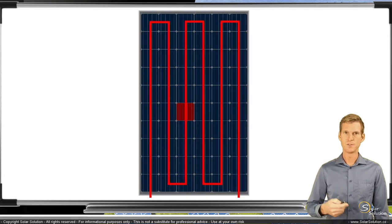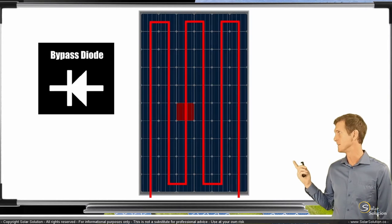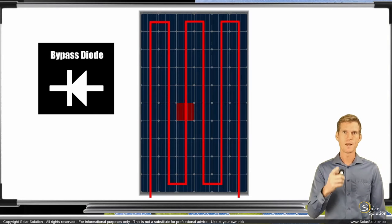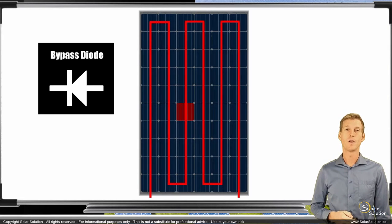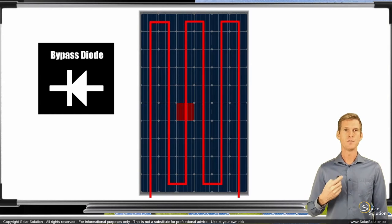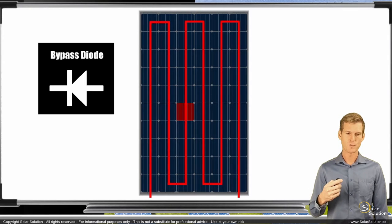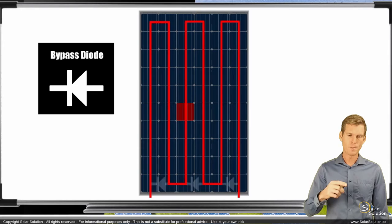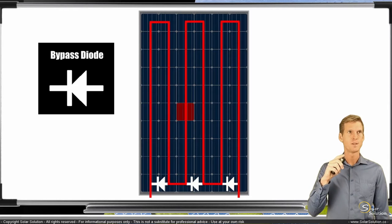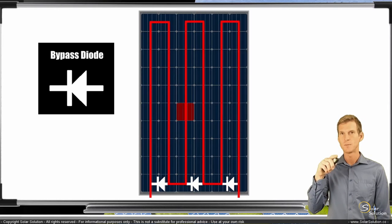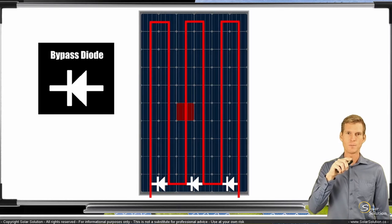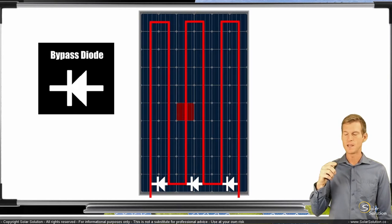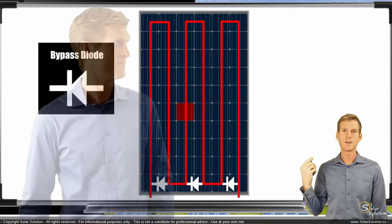Now we introduce the bypass diode. By the way, this is the symbol of the bypass diode. We introduce the bypass diode, which is a small electrical component, and we place it in the module where we create three short shortcuts in the complete circuit wiring. We place the three bypass diodes as you can see here in the diagram.